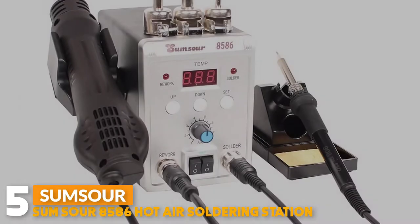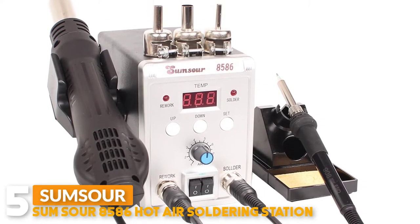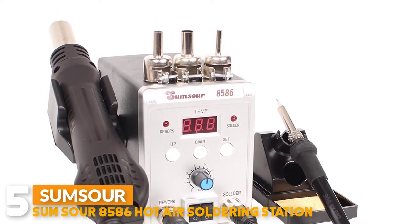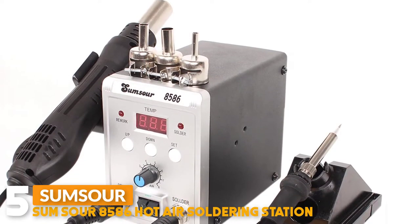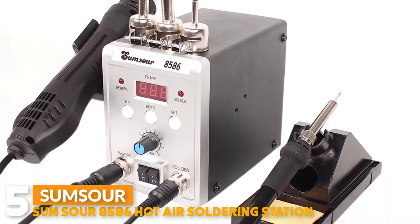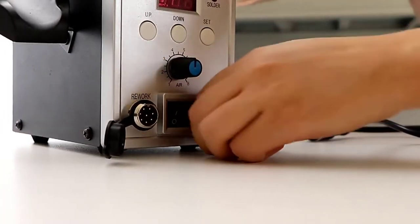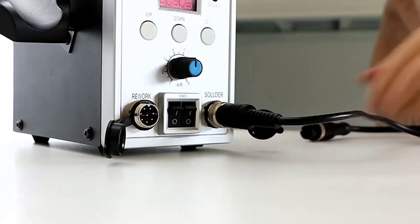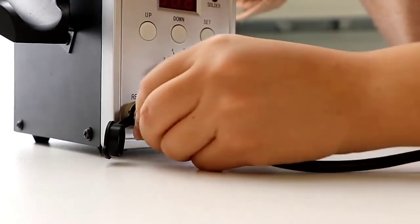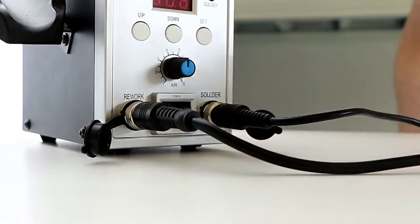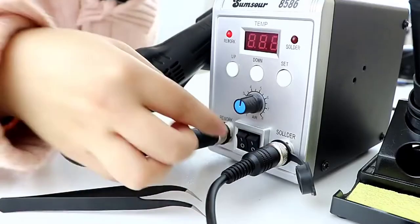Number 5. Sumsour 8586 Hot Air Soldering Station. This is a brand new 2-in-1 SMD rework soldering station 8586, with an alloy metal body and high quality silicone shell featuring elegant appearance and power saving. You can use the hot air gun and soldering iron separately with no interference with each other. This soldering station provides adjustable air flow and temperature control rotation easily.